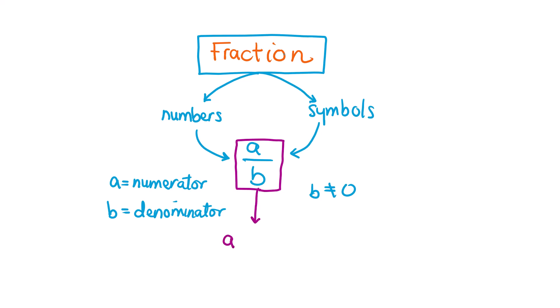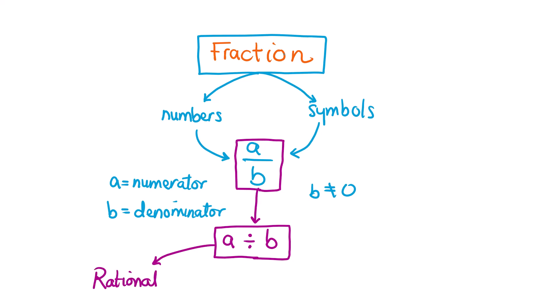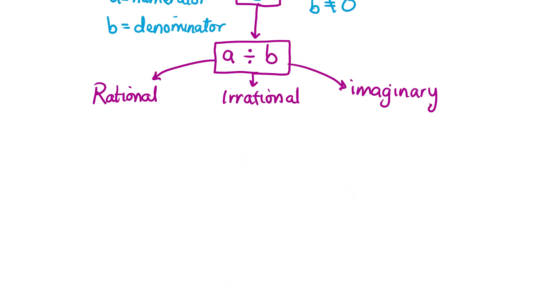Take note that a over b means, in terms of operations, that a is divided by b. The application of a divided by b always produces numbers that can either be rational numbers, irrational numbers, or imaginary numbers.